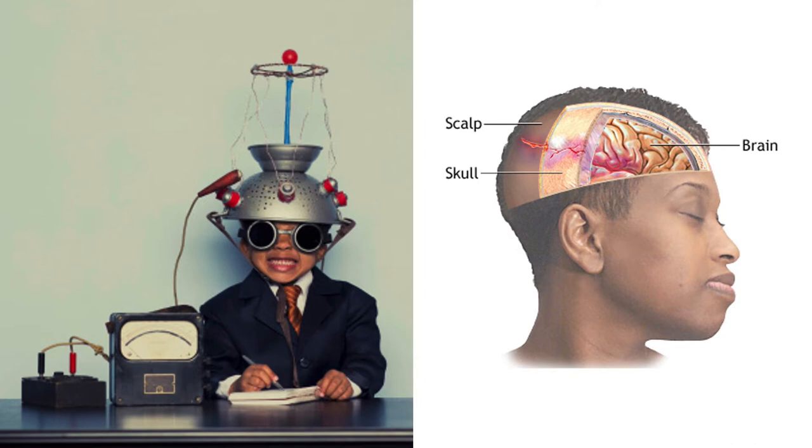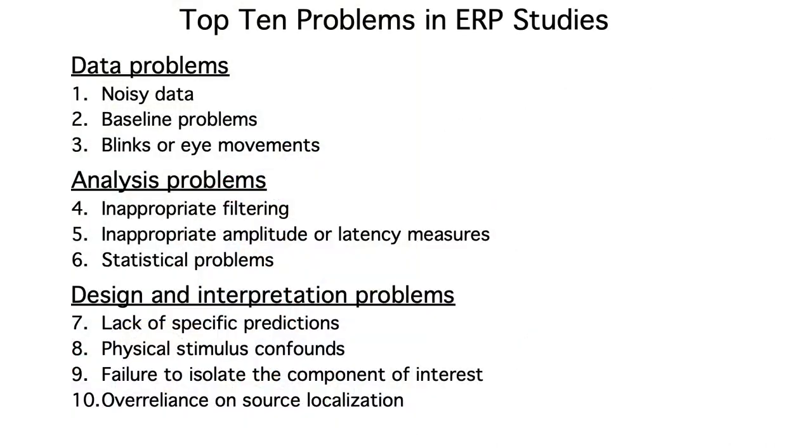After all, we're trying to measure brain activity from electrodes on the skin over the skull. So you need to know what to look for when trying to judge whether the conclusions of an ERP study are valid. Of course, I can't cover every possible problem that might arise. Instead, I'm going to focus on the top 10 most common problems that I see in ERP papers.